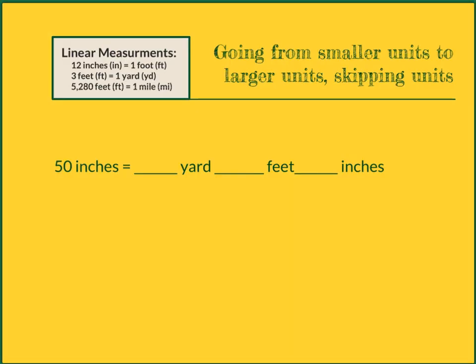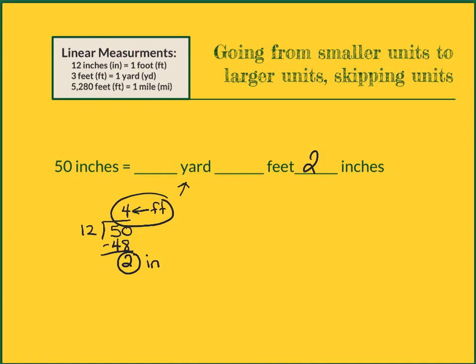For this last type of problem, you may come across where you actually have to break it down into multiple pieces. Here I have 50 inches and I want to change it into yards. I can figure out how many feet I can get out of these inches by taking 50 and dividing it by 12. I know I can get 4 groups of 12 out of 50 with a remainder of 2, so that gives me 4 feet 2 inches out of 50 inches. My 2 inches goes here. The 4 feet is the only thing I need to break down — can I get a yard out of 4 feet? Dividing 4 feet by 3 gives me 1 yard, 1 foot, and 2 inches left over.